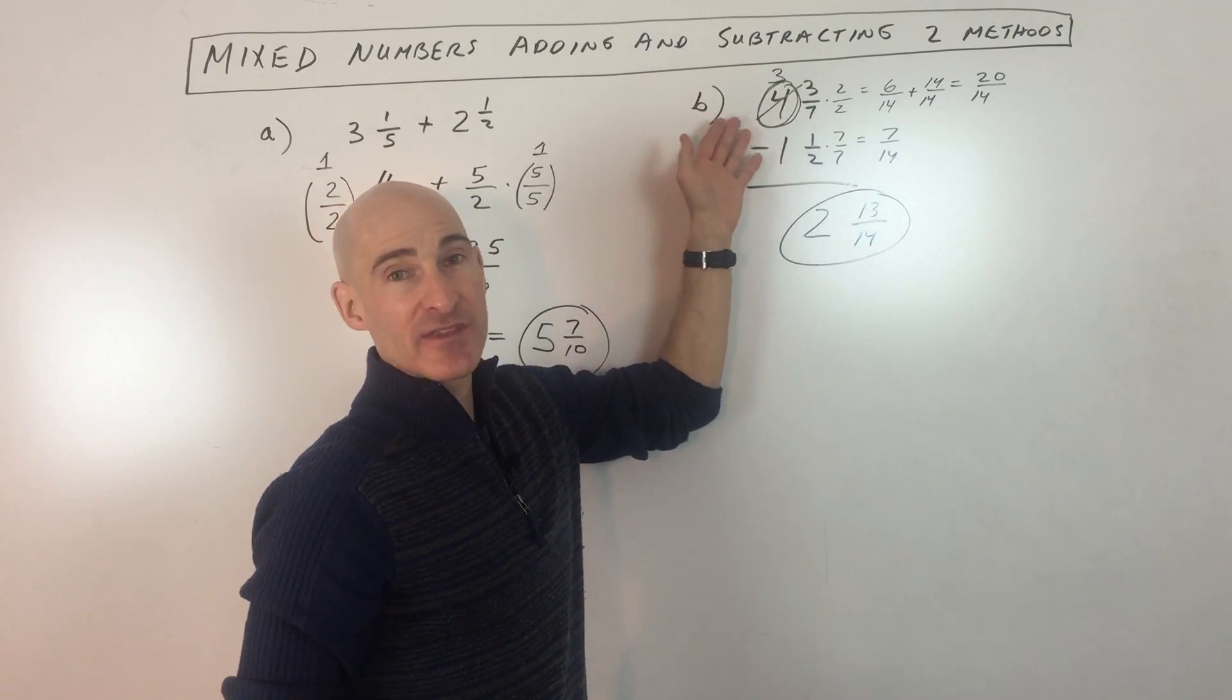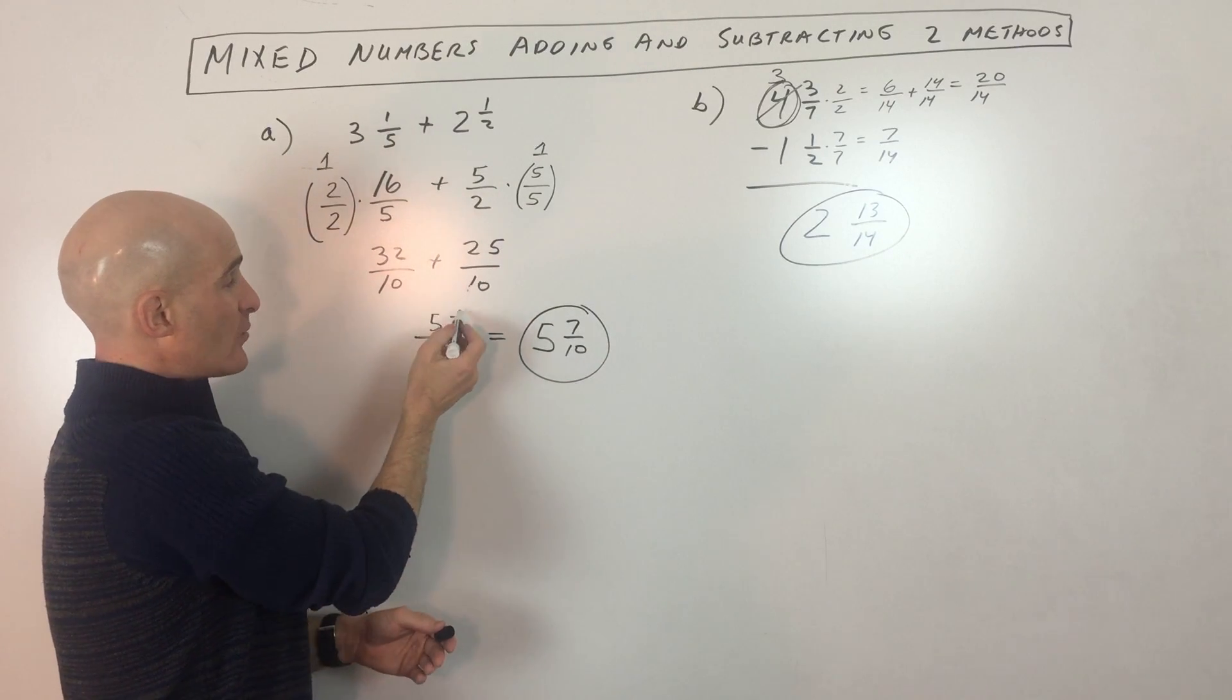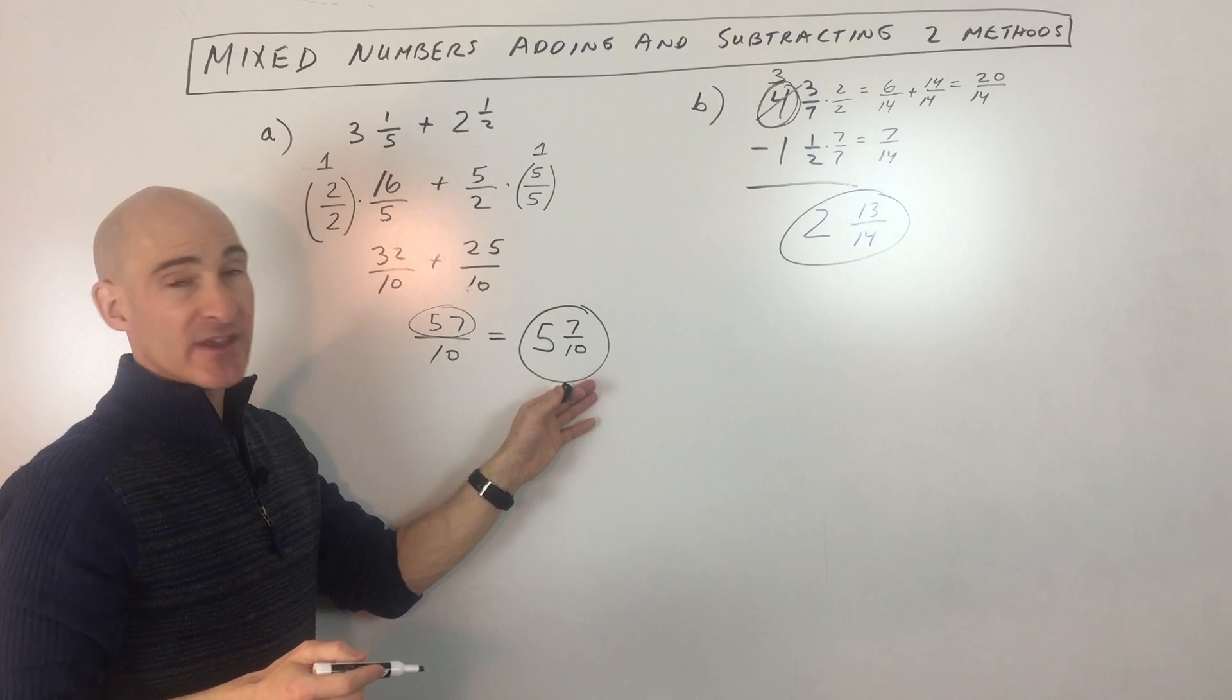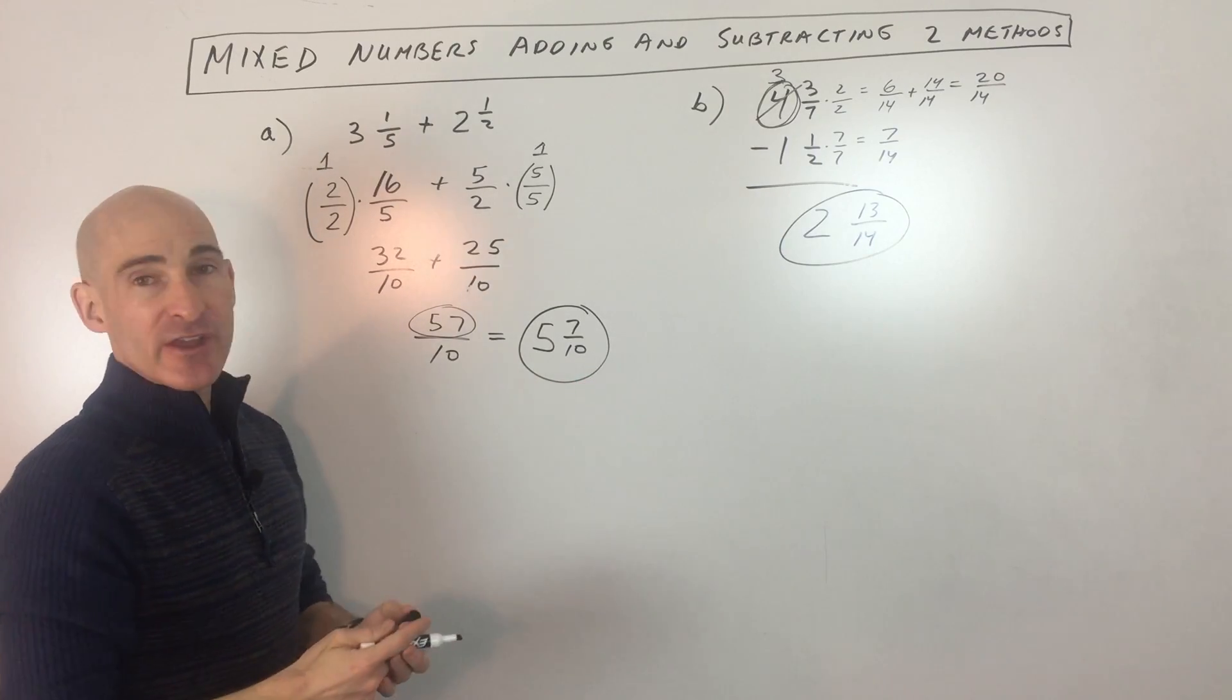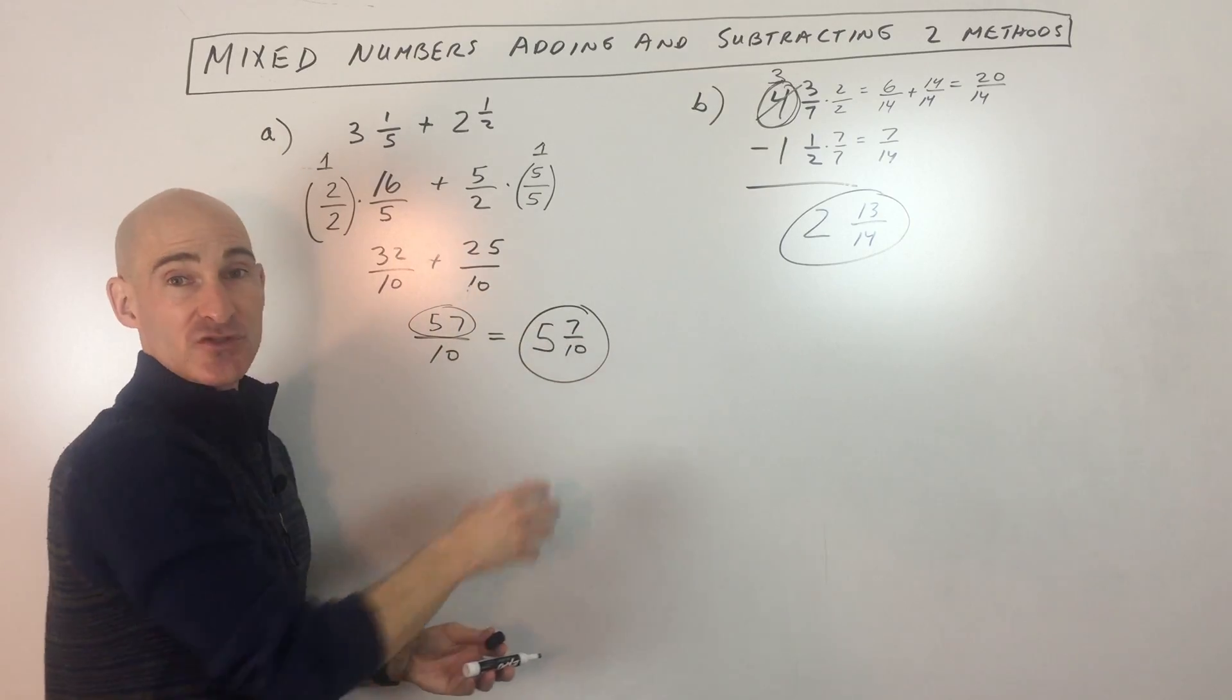I kind of like this method better just because what happens when you convert them into improper fractions, sometimes you end up with some pretty large numbers, and then you have to go and convert it back to a mixed number. So it seems like there's a lot of converting. First you convert it to an improper, then you combine them, then you have to convert it back to a mixed number.